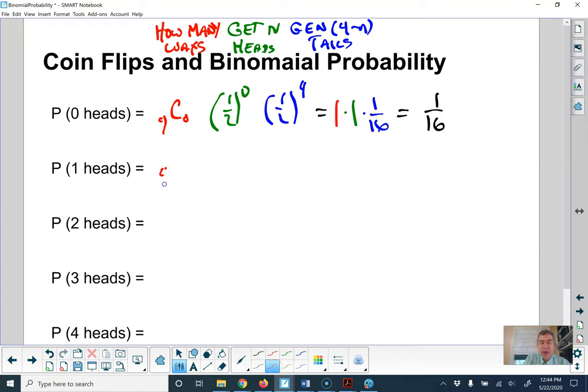On the other hand, one head, four choose one. You want heads to come up one time and you want tails to come up, therefore, three times. So one half to the first for heads, one half to the third for tails. Four choose one is four. There's four different possible ways that you could get one head out of four coins. One half to the first is one half, and one half to the third is one eighth. For a grand total of four over 16, which again matches what you saw before.